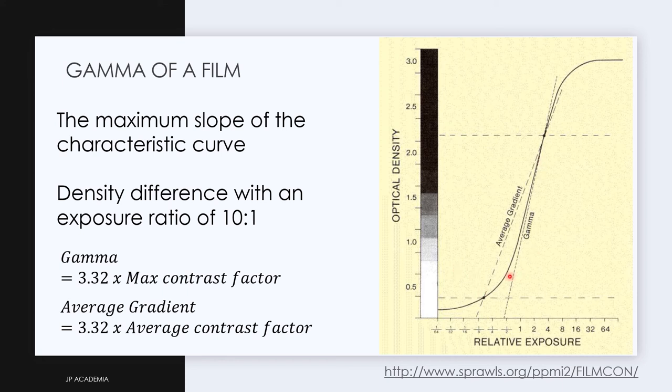This is the slope in terms of the density difference with an exposure ratio of 10 to 1. This can be expressed in terms of the maximum contrast factor by multiplying this 1 to 3.32.